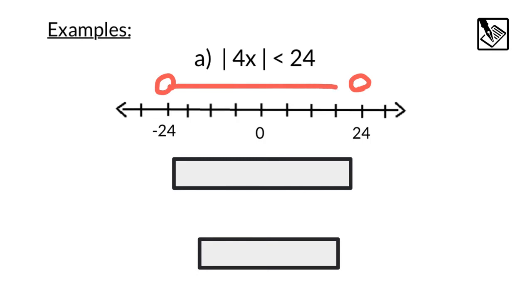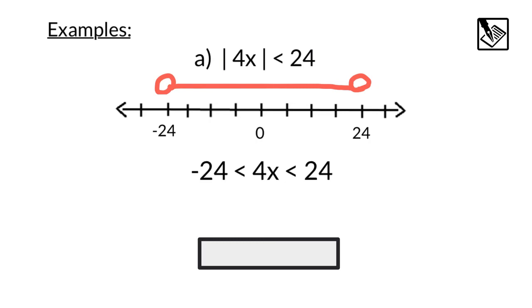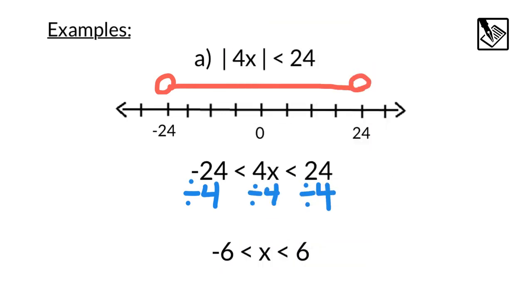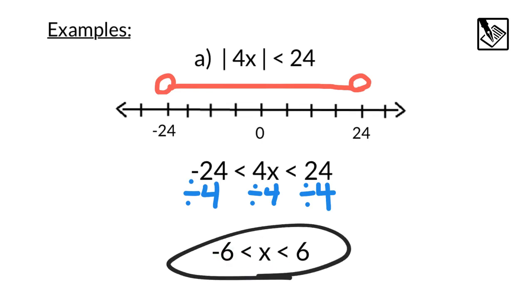I know it's going to be in between those values. In other words, 4x — the value inside my absolute value — is bigger than negative 24 and less than 24, right there in between. If we solve this using the same principles of solving equations, we can divide by 4 to get x by itself, dividing by 4 to each part of the inequality to make sure everything stays equal. That gives us final values between negative 6 and positive 6. That's our answer.